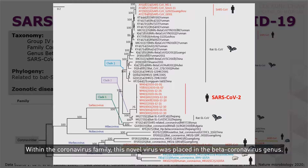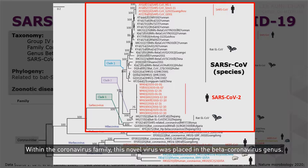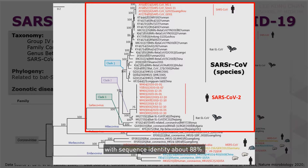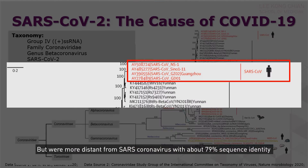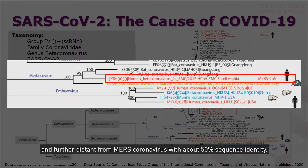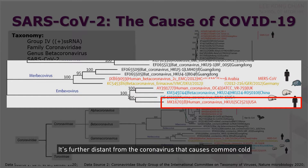Within the coronavirus family, this novel virus was placed in the beta-coronavirus genus. Notably, its genome is closely related to two bat-derived SARS-like coronaviruses, with sequence identity of about 88%. It was more distant from SARS coronavirus, with about 79% sequence identity, and further distant from MERS coronavirus, with about 50% sequence identity. It is further distant from the coronaviruses that cause the common cold in humans, as highlighted at the bottom of the slide.